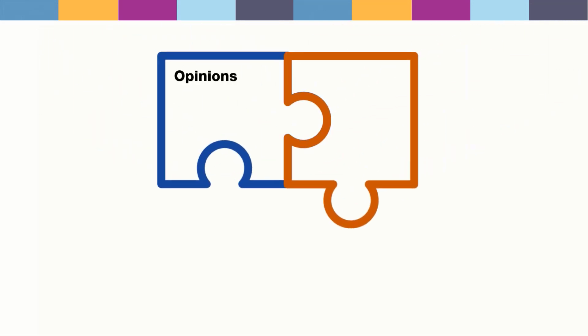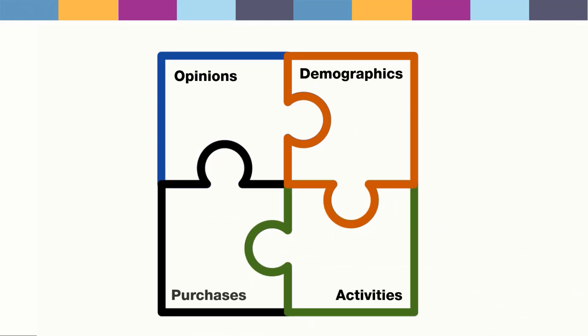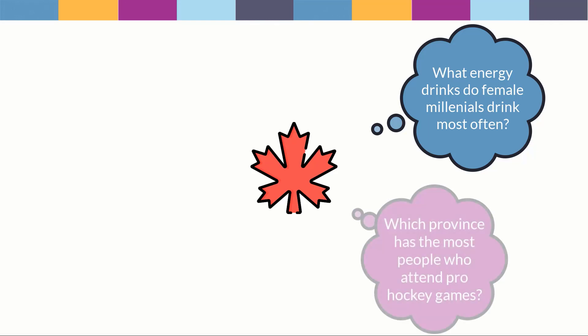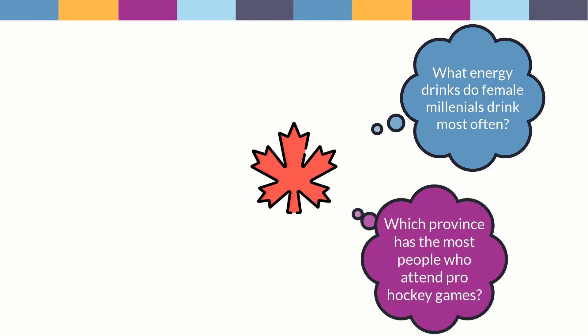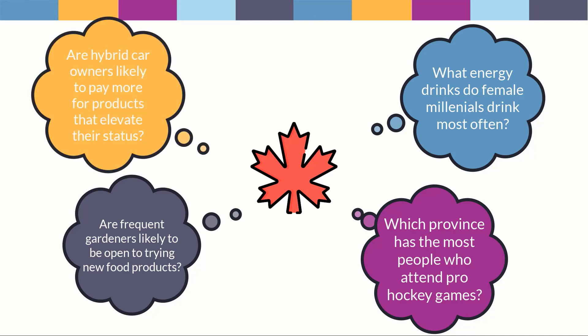The Vividata database, available via the library, allows you to connect those puzzle pieces in many ways to answer different questions. For instance: What energy drinks do female Millennials drink most often? Which province has the most people who attend pro hockey games? Are frequent gardeners likely to be open to trying new food products? And are hybrid car owners likely to pay more for products that elevate their status?